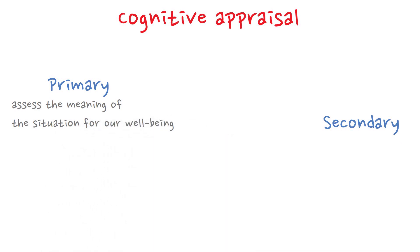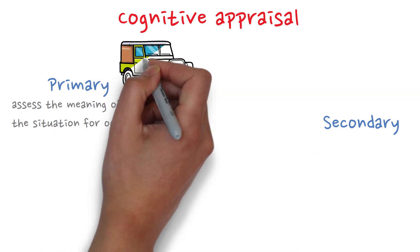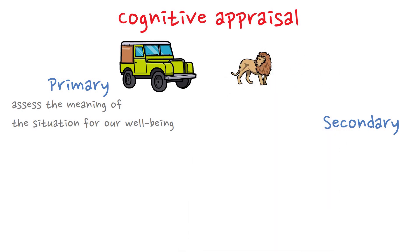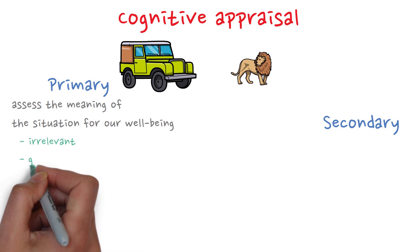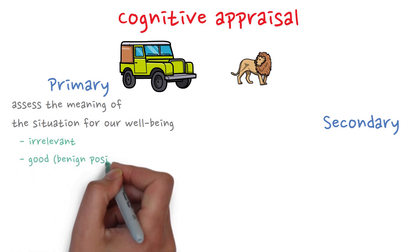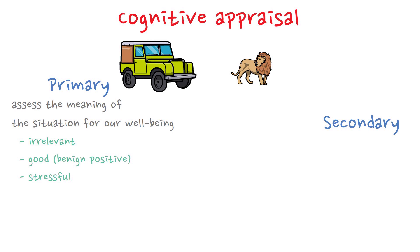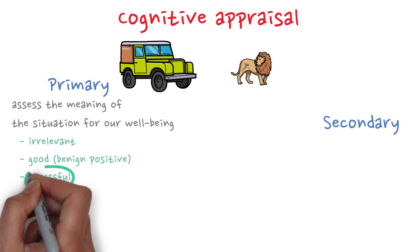For example, let's say during a safari tour, the jeep breaks down and you see a lion close by. The primary appraisal of this situation will seek answers to questions such as: what does this mean to me? Will I be okay? Your primary appraisal could give you one of three judgments: it's irrelevant, it's good (also known as benign positive), or it's stressful. In our case, we would obviously appraise it as stressful, and it will lead to further appraisal.